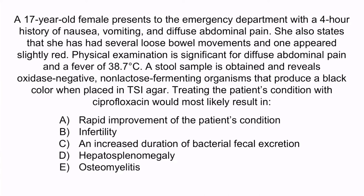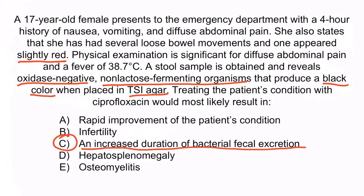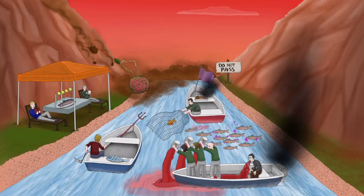This patient has signs and symptoms consistent with Salmonella gastroenteritis. The patient's history, especially the red or bloody stools, is suggestive of a bacterial infection. The stool sample revealing oxidase-negative, non-lactose fermenting organisms that produced a black color on TSI agar is especially helpful because this rules out other competing diagnoses such as Campylobacter, E. coli, and Shigella. Campylobacter is oxidase-positive, E. coli ferments lactose, and Shigella will not produce a black color on TSI agar. Therefore, we can be confident the pathogen is Salmonella. The correct answer is C — an increased duration of bacterial fecal excretion. Recall that the DO NOT PASS sign should help you remember that antibiotics should not be given in a patient with a gastrointestinal-related Salmonella infection because it will prolong bacterial shedding in the stool.